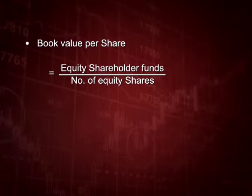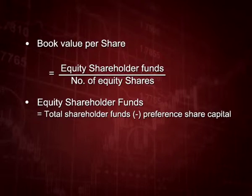The next ratio is book value per share. As the name suggests, it is the value as per the books of account. This is calculated by dividing equity shareholder funds by the number of equity shares. Total shareholder funds comprise of preference share capital also, so if we deduct preference share capital from total shareholder funds, that gives us equity shareholder funds.